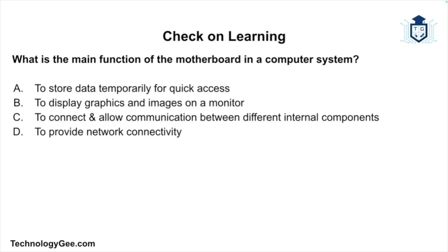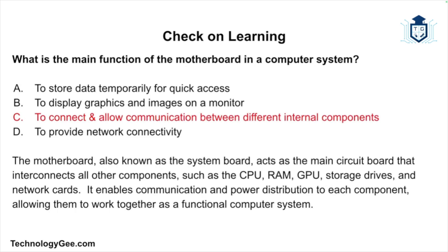While other components like the motherboard, RAM, and NIC play important roles, the CPU is primarily responsible for the core processing and computing tasks. Question two: what is the main function of the motherboard in a computer system — to store data temporarily for quick access, to display graphics and images on a monitor, to connect and allow communication between different internal components, or to provide network connectivity? The answer is that it connects and allows communication between different internal components. The motherboard, also known as the system board — or logic board on Apple machines — acts as the main circuit board that interconnects all components such as the CPU, RAM, GPU, storage drives, and network cards.